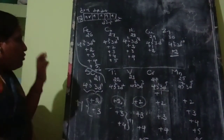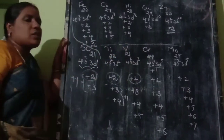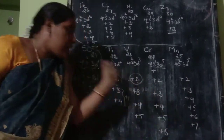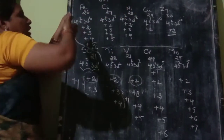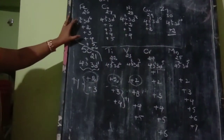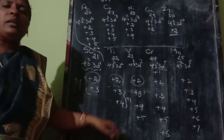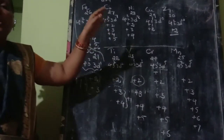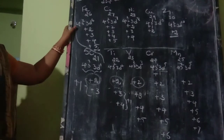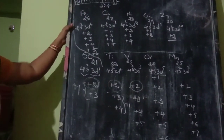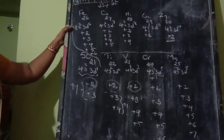We can observe that from scandium to manganese, the number of oxidation states gradually increases. But from iron to zinc, as electrons begin pairing in D orbitals, the number of variable oxidation states decreases. The difference between any two successive oxidation states is one unit of positive charge.